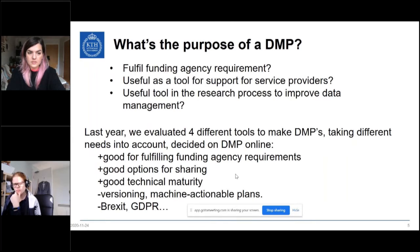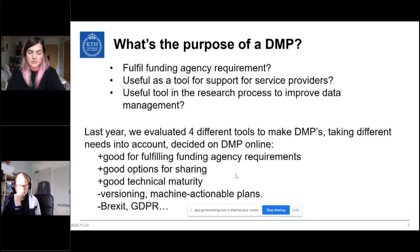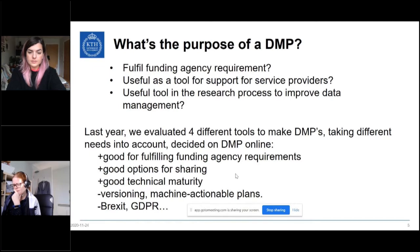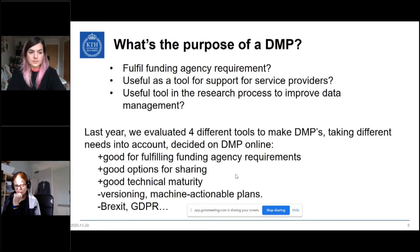The reasons we chose DMP Online were good options for sharing — remembering that researchers collaborate with people from other organizations — technical maturity not found among other tools at that time, and good support for fulfilling funding agency requirements. Some issues included versioning not being great, plans not being very machine-actionable, though work is ongoing on this, and also concerns regarding storage of data in the plans in the context of Brexit, which we haven't fully resolved.